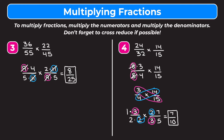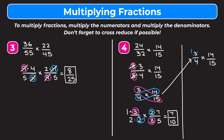Now let me show a shortcut so you don't always have to write out all the factors. Starting from 3 fourths times 14 fifteenths: look at the diagonal pairs. 3 and 15 are both divisible by 3, so divide both — 3 becomes 1 and 15 becomes 5. Then 4 and 14 are both divisible by 2 — 4 becomes 2 and 14 becomes 7. Now we have 1 over 2 times 7 over 5. Multiply across: 1 times 7 is 7, and 2 times 5 is 10 — the same answer, 7 tenths.